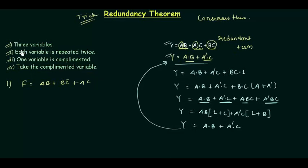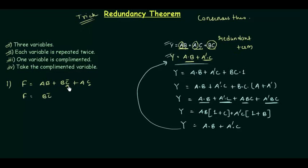The first step is to check whether there are three variables — we have a, b, and c. Each variable is repeated twice: a appears twice, b appears twice, c-complement and c appear. The third condition: one variable is complemented, and c is complemented whereas a and b are not. Taking the terms containing the complemented variable c, the reduced function is b·c-complement or a·c, and the term a·b is omitted.